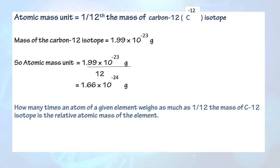Carbon-12 means — don't be confused — if you take carbon, there are several isotopes. Within those, we are going to use the mass of carbon-12. So atomic mass unit means 1 over twelfth of the mass of carbon-12. The real mass of carbon-12 is 1.99 × 10⁻²³ grams. So we divide this real mass of carbon-12 by 12, and we get the atomic mass unit: 1.66 × 10⁻²⁴ grams. We are going to compare all the real weights of elements to this 1.66 × 10⁻²⁴ grams.